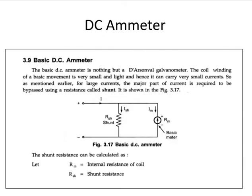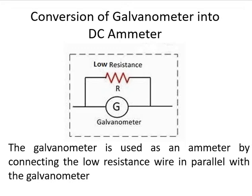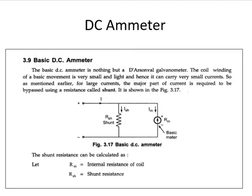This is the basic diagram of the DC ammeter. It consists of a shunt resistance, that is a parallel resistance, denoted by R_SH. The basic meter's internal resistance is R_M, also known as the coil resistance. The current flowing through the shunt resistance is I_SH, and the current flowing through the basic meter is I_M. The total current in the circuit is I, where I = I_SH + I_M. The basic DC ammeter is also known as a D'Arsonval galvanometer or D'Arsonval movement. The coil winding is very small and light, so it can carry only very small current.